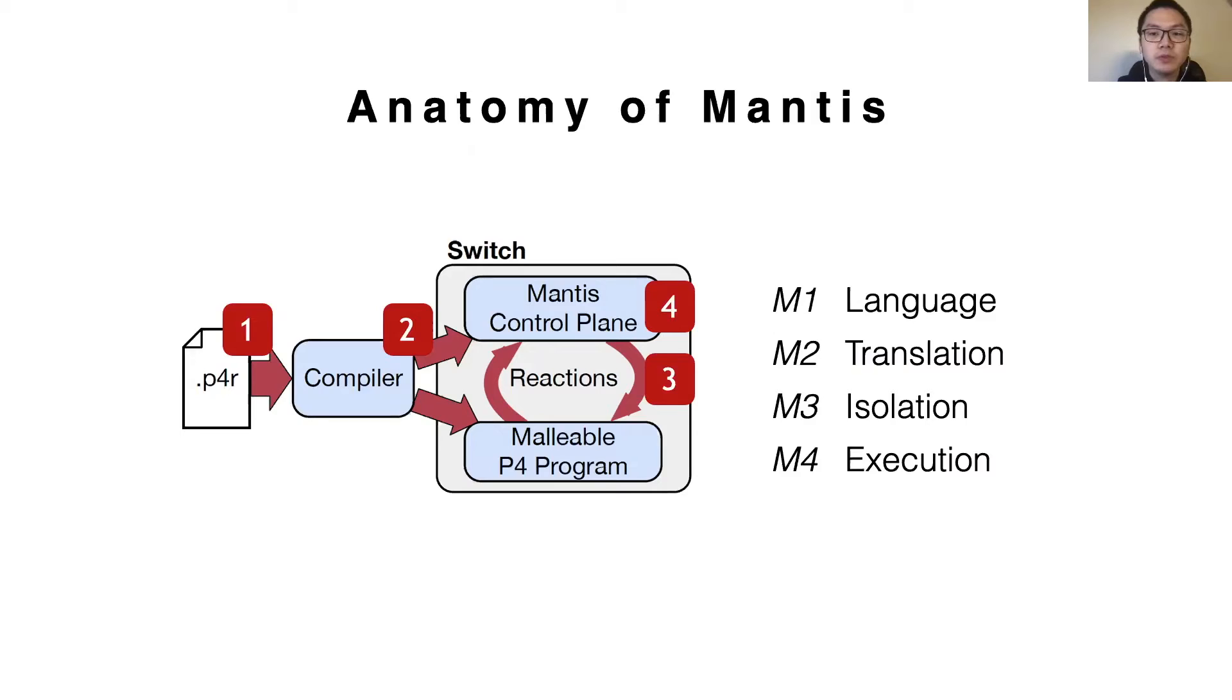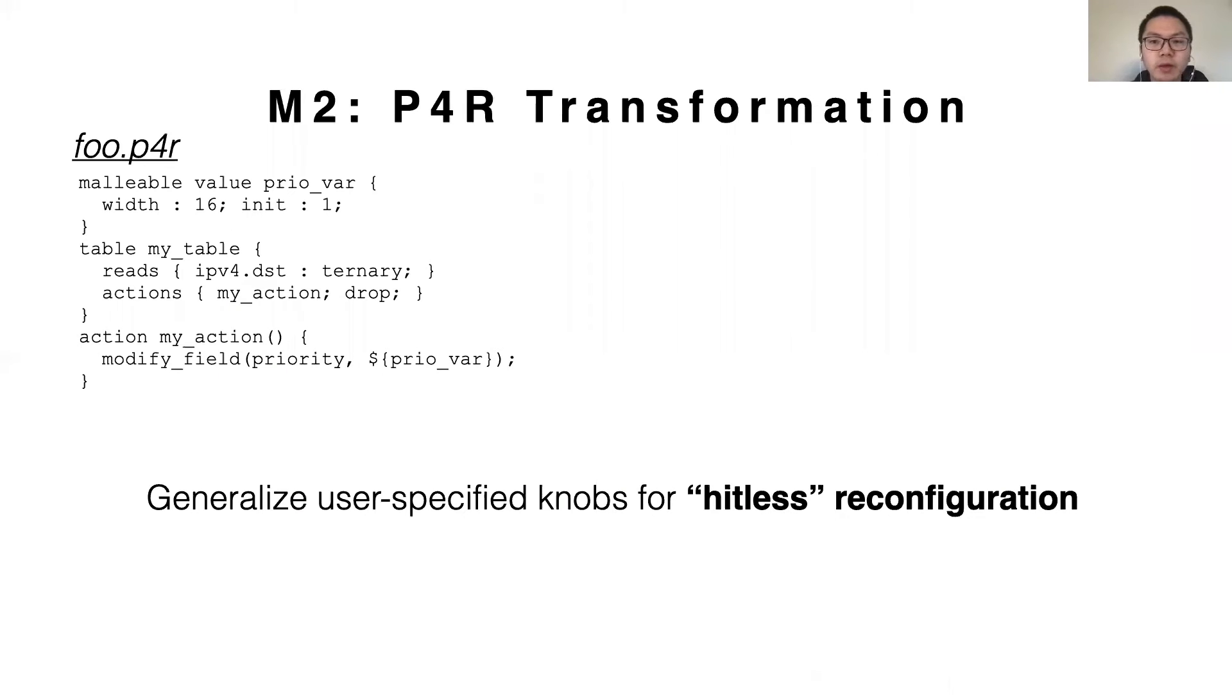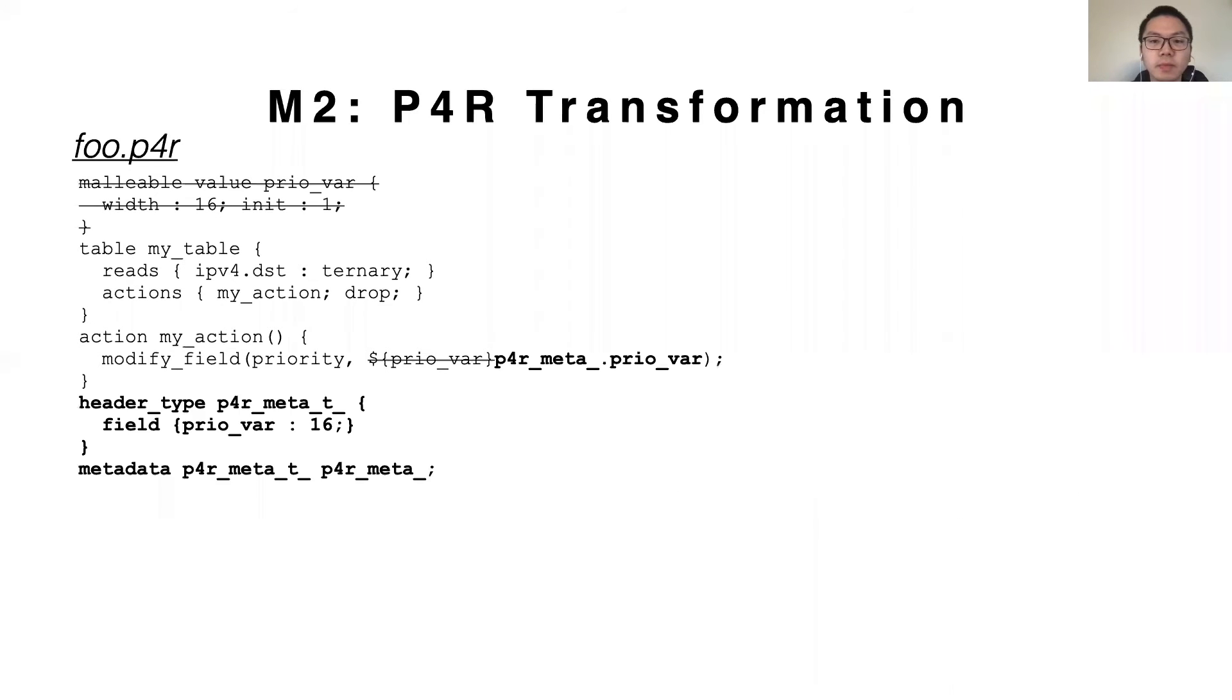I just showed you the P4R language that is used to specify the reactive behavior. Now I'm going to talk about how to translate that into something deployable in RMT switches. I'll start by talking about how to translate a reaction with a single operation. In M3, we'll later talk about more complex operations and the concurrency issues that result. One of the primary goals of Mantis's transformation from P4R to P4 is to create the P4 program that is dynamically reconfigurable.